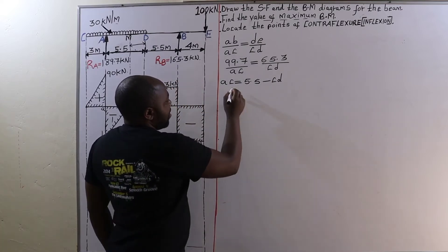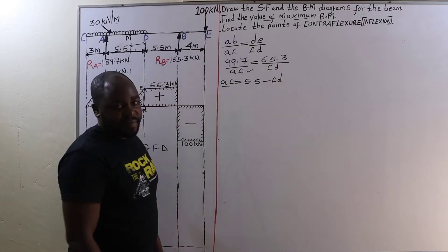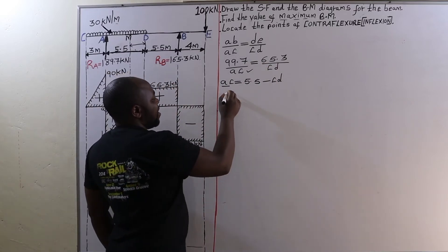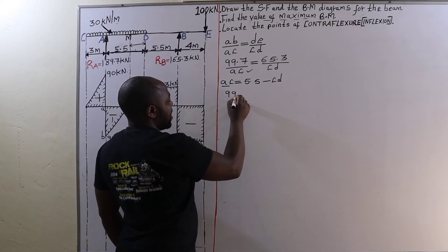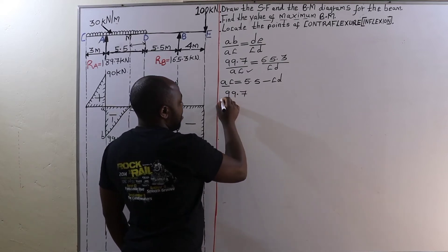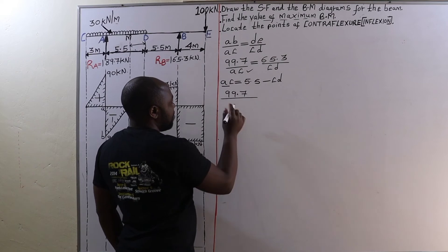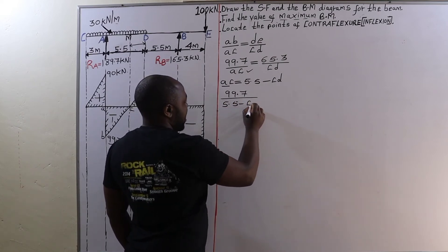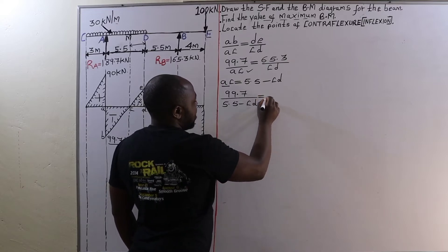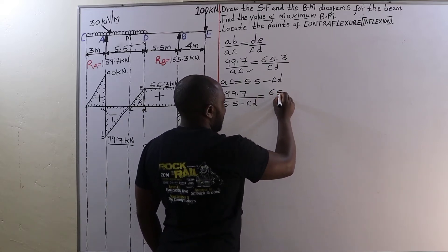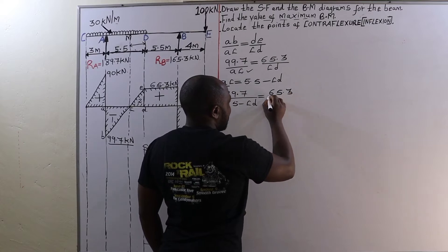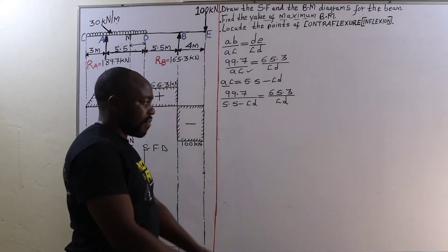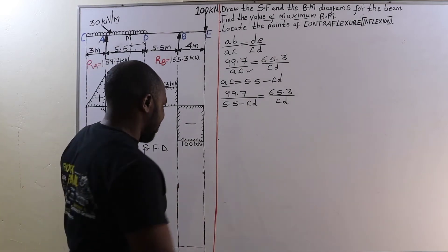Now this AC we are going to substitute it at that point, which will lead us to 99.7 all over AC, which is 5.5 minus CD, is equal to 65.3 all over C to D. So that's how you're going to write.